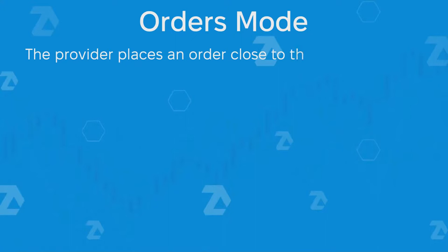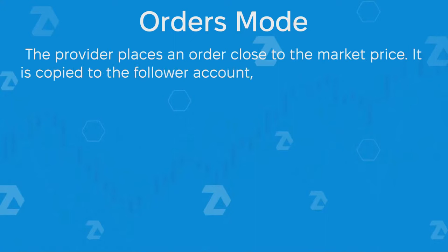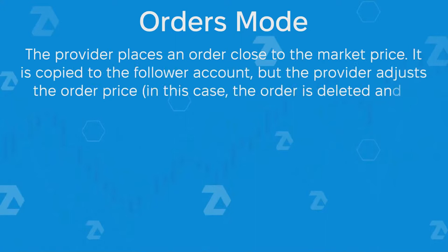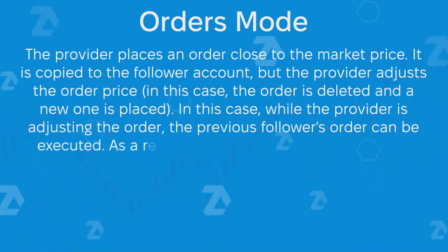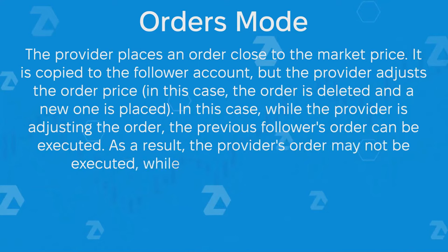Orders mode: the provider places an order close to the market price. It is copied to the follower account, but the provider adjusts the order price. In this case, the order is deleted and a new one is placed. So while the provider is adjusting the order, the previous follower's order can be executed. As a result, the provider's order may not be executed while the follower's order may be. Such operation of the module is also correct.